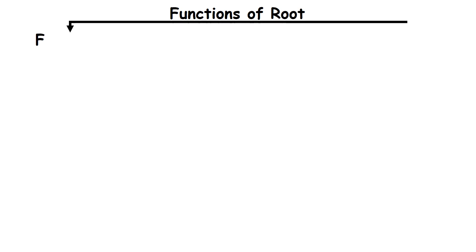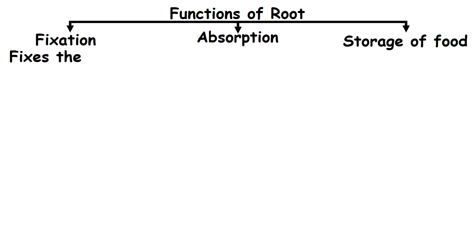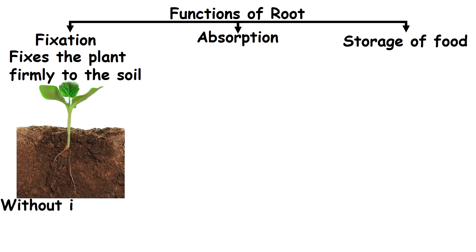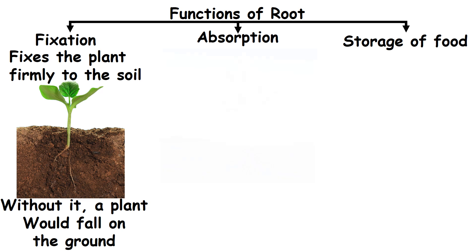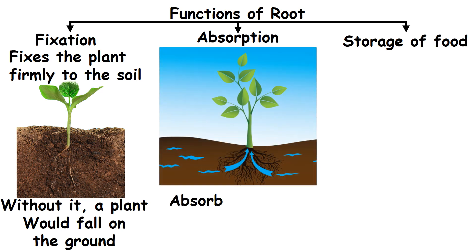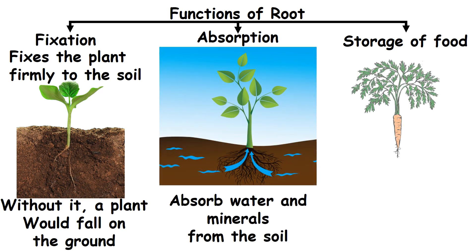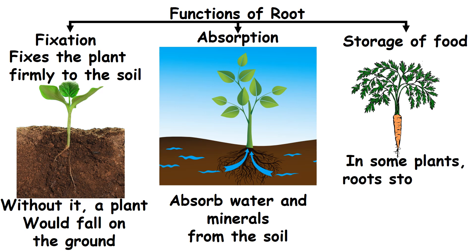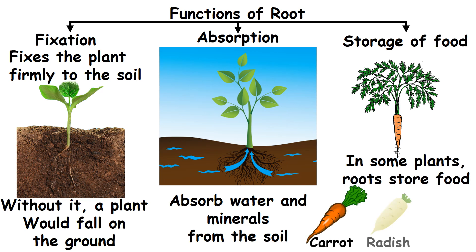Functions of root: fixation, absorption and storage of food. Root fixes the plant firmly to the soil. Without the roots, a plant would fall on the ground. Roots absorb water and minerals from the soil. In some plants, roots store food. Example: carrot, radish and beetroot.